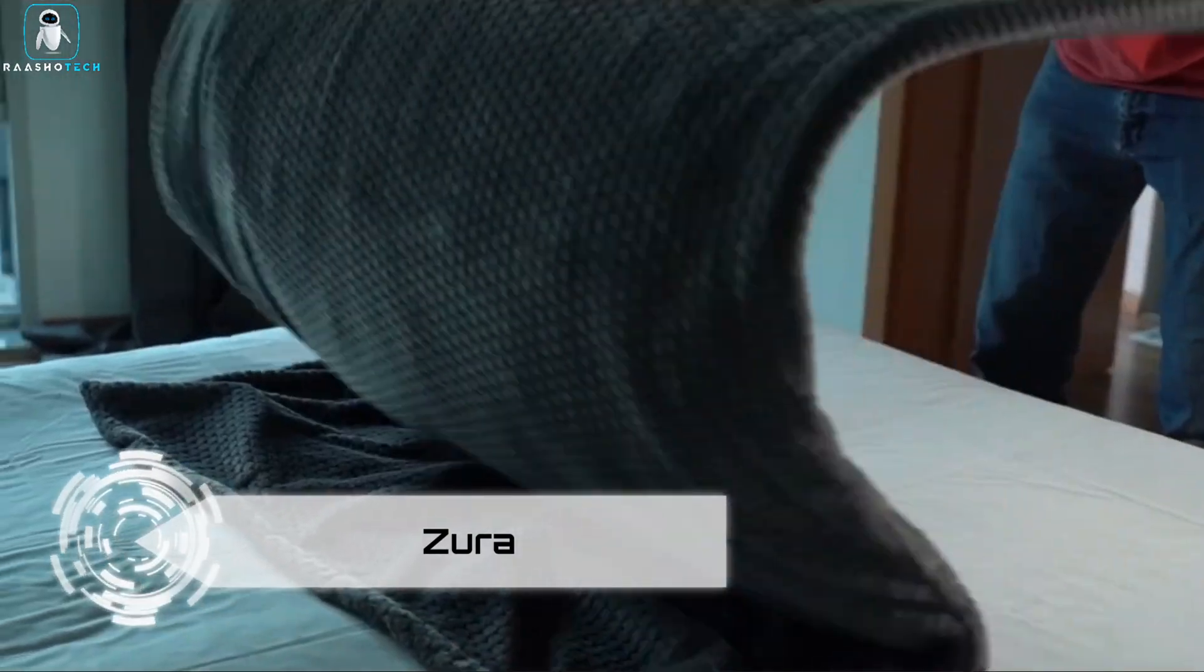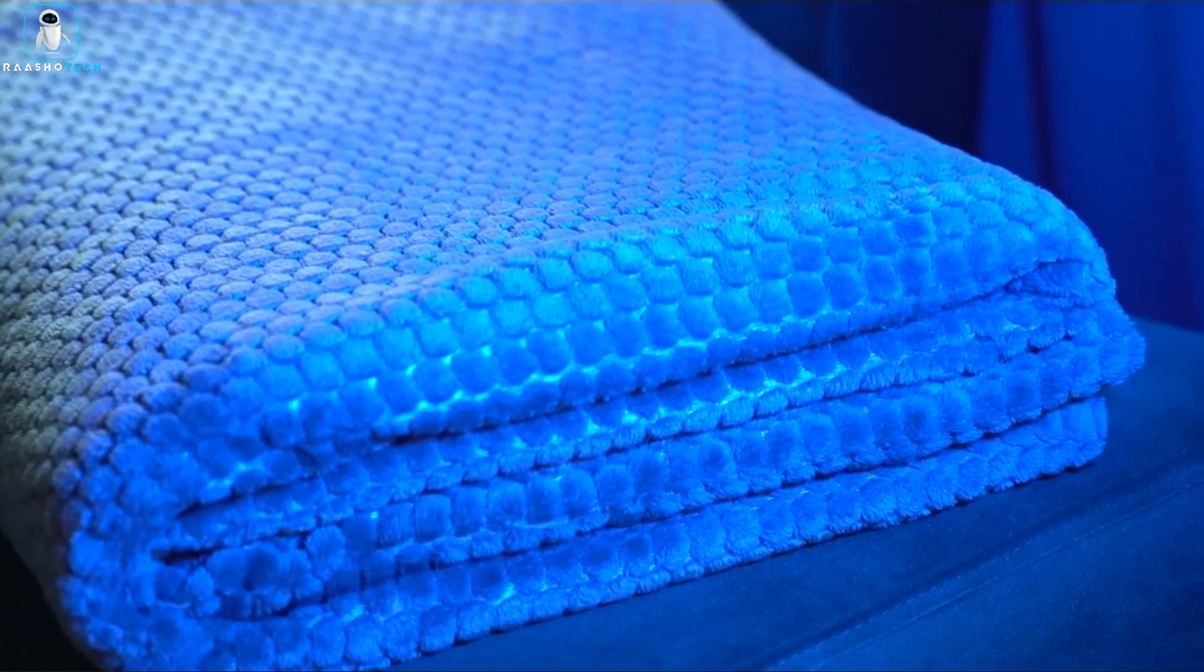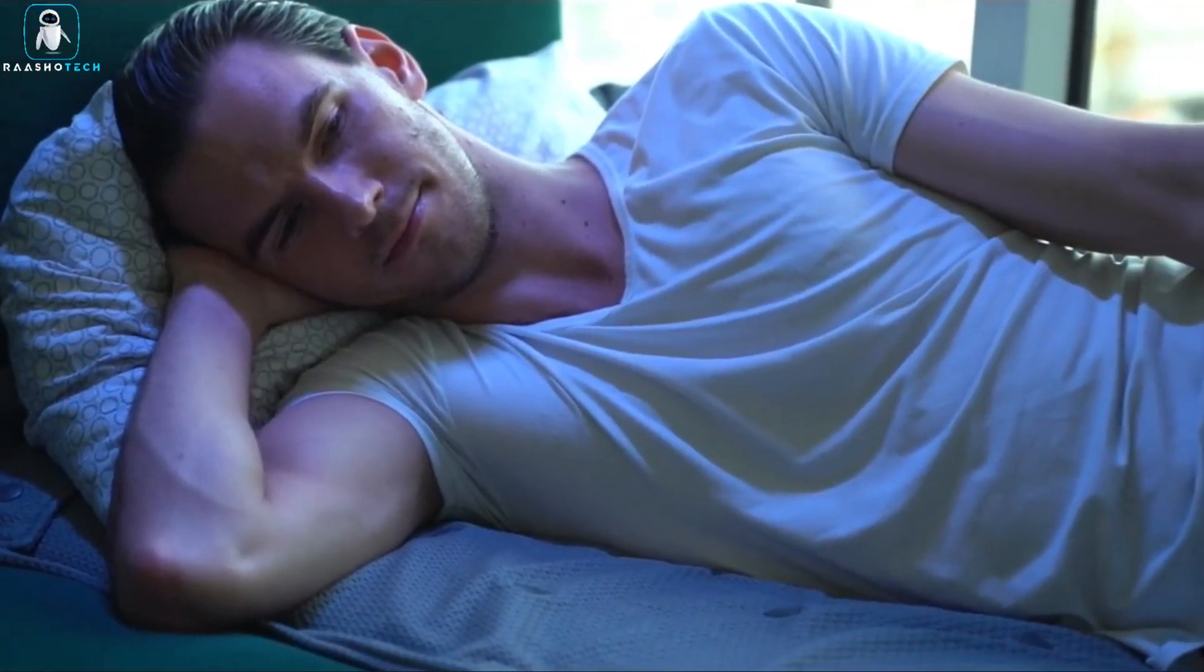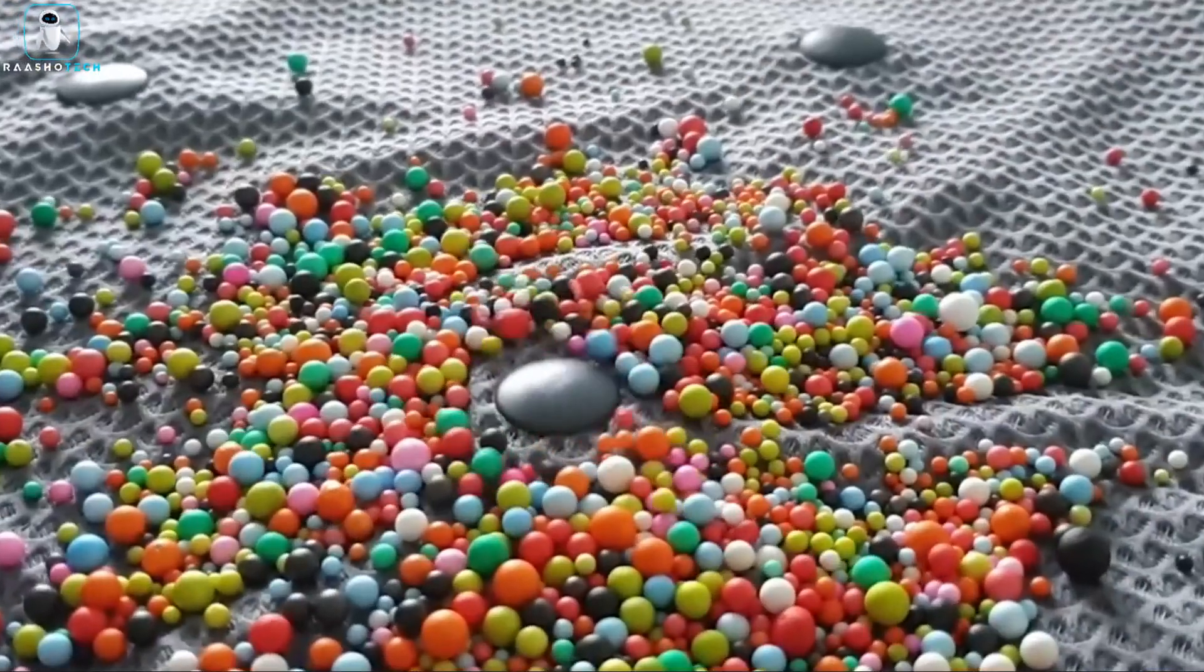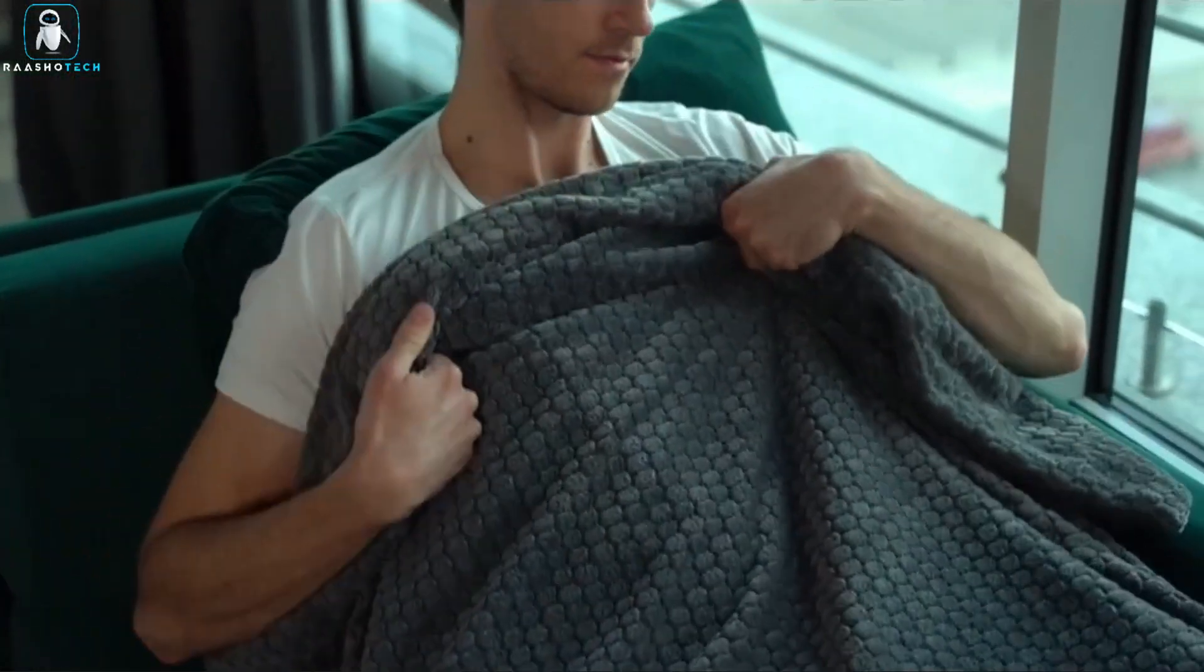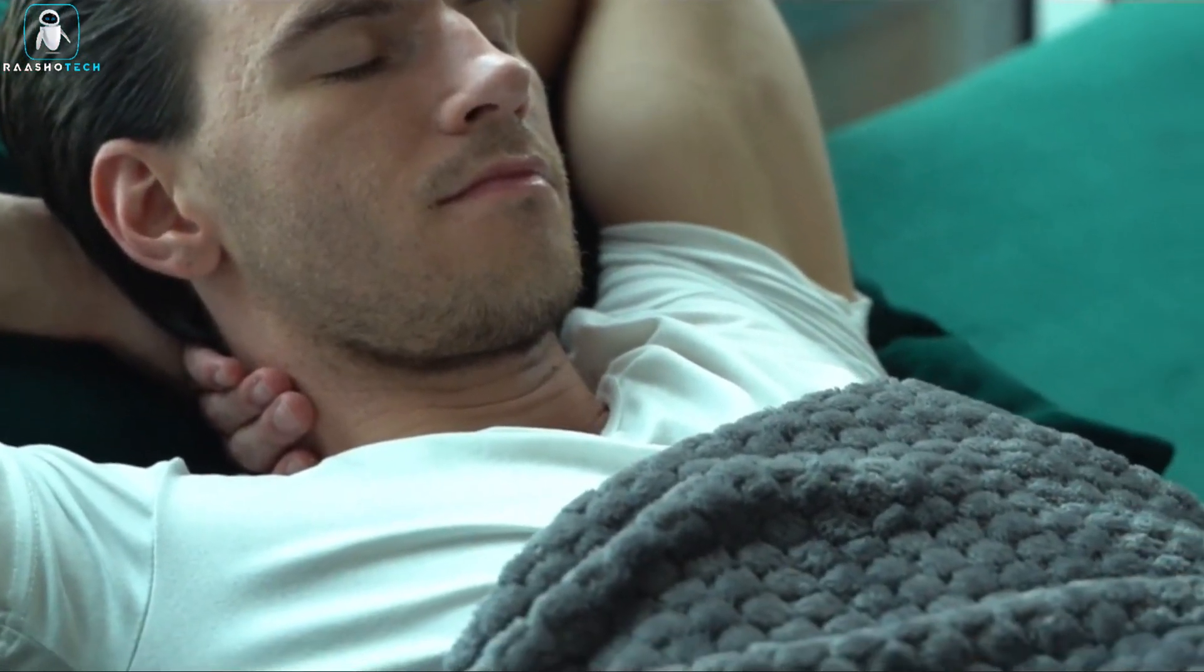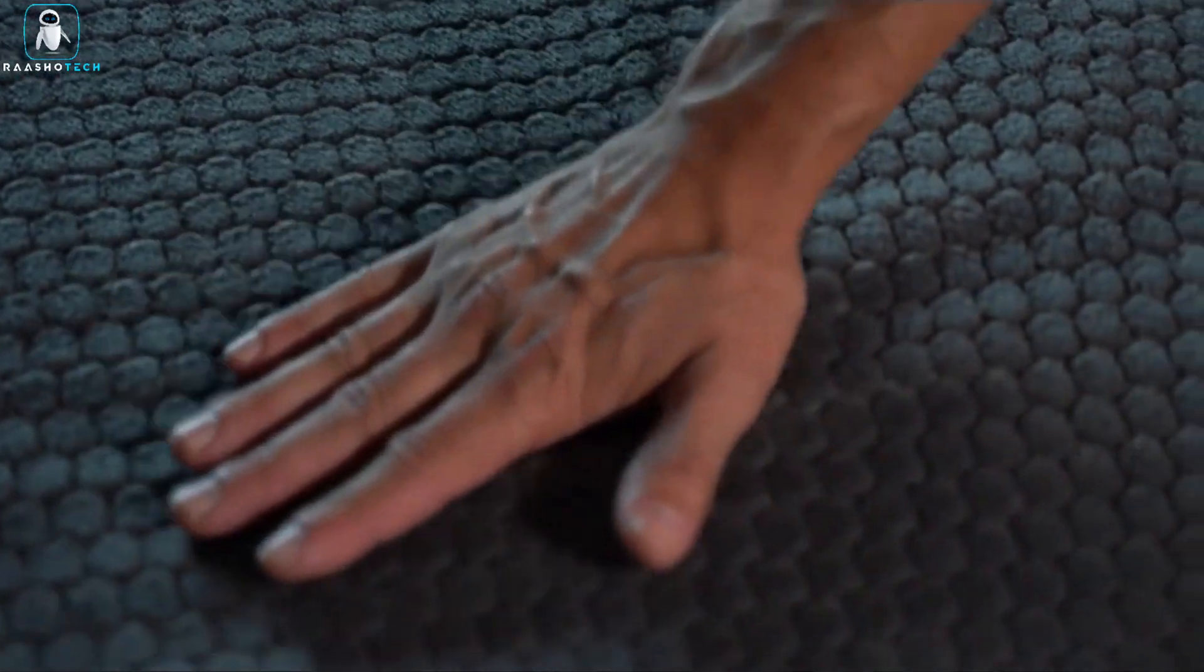Tired of tossing and turning all night? Enter the Zura Vibrating Blanket, the ultimate sleep savior that's here to banish your bedtime blues. Crafted for both comfort and aesthetics, this magical blanket boasts the soft embrace of down velour and polymer mesh. But wait, it's not just a cuddle buddy, it's a sleep wizard. With a whopping 94 vibration motors, it's like a massage paradise replicating raindrops, waves, and random lines.